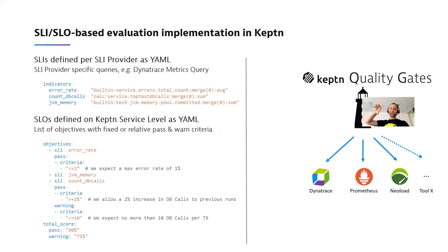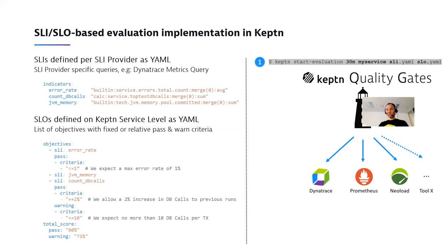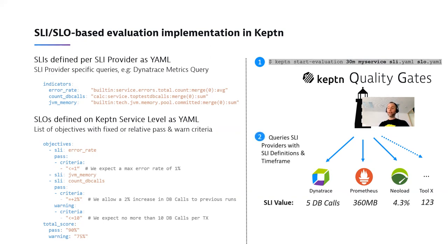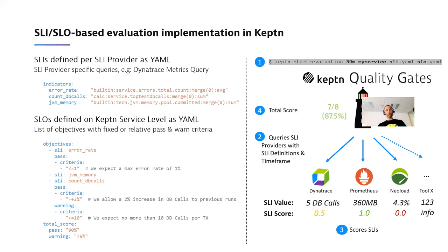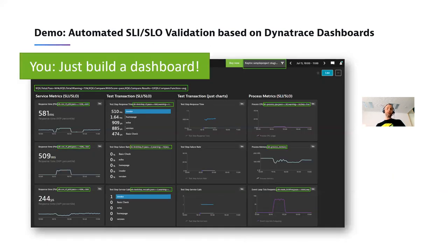In Keptn, you specify SLIs in an SLI YAML file — you list the metrics and put the query language next to it for the particular tool you're using. Then you specify your SLOs in a separate file. When you ask Keptn to evaluate, Keptn sends an event saying 'which tools can give me these SLIs?' Whatever tool you've connected reports the value, Keptn scores every single value based on the SLOs, and comes up with a total score translated into pass, warning, or fail. Let me show you this with Dynatrace — though this also works for Prometheus and others, I'm using Dynatrace because it's my day job.